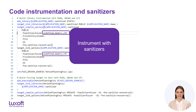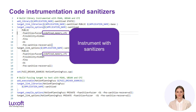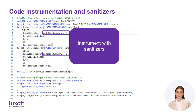Fuzzing detects crashes, but bugs don't always manifest themselves as an immediate termination of the program — sometimes errors will be subtle and show themselves only after a long time. To expose the bugs sooner we use sanitizers. They add an extra monitoring layer to the software under test and terminate the program as soon as they detect suspicious behavior. It is recommended to combine fuzzing with multiple sanitizers to detect as many bugs as possible.